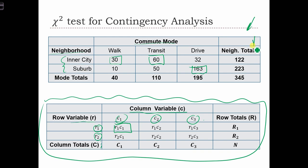Across the right-hand side, we have the row totals. So capital R1 is the total number of people who live in the inner city, and capital R2 is the total number of people that live in the suburbs. Across the bottom, we have our column totals - the total number of walkers, transit riders, and drivers. And in this bottom right-hand corner, you have the total sample size, N. So in this case, our survey was of 345 individuals.